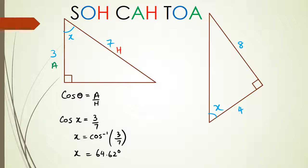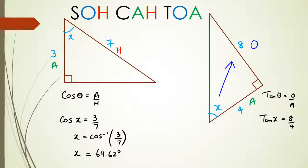That gives x = 64.62 degrees. Note that I don't work with decimals - I keep things as fractions like 3/7, because if you use recurring decimals in the inverse function you might not get an accurate answer. For the second example, I have opposite = 8 and adjacent = 4, so I'm using tan: tan x = 8/4. I can simplify that to inverse tan of 2, which gives 63.4 degrees.